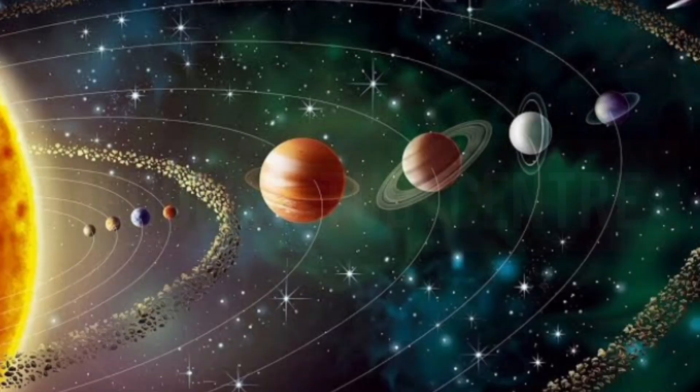Our solar system is the collection of the sun, eight planets, satellites and some other celestial bodies which is known as asteroids and meteoroids from the solar system.